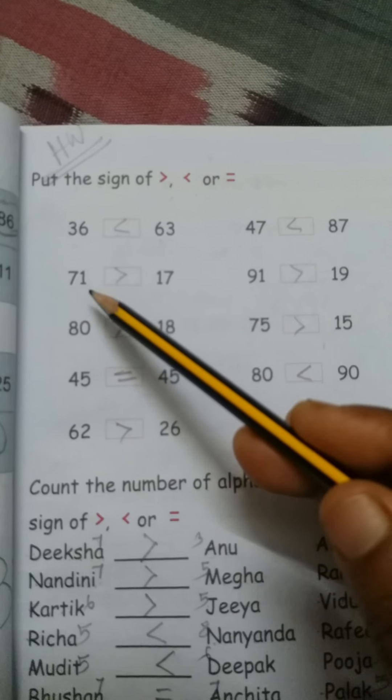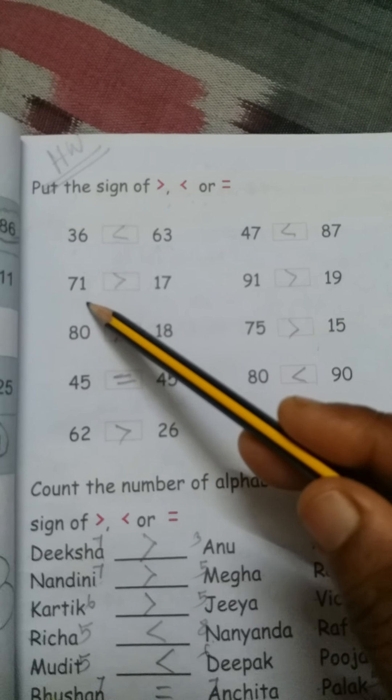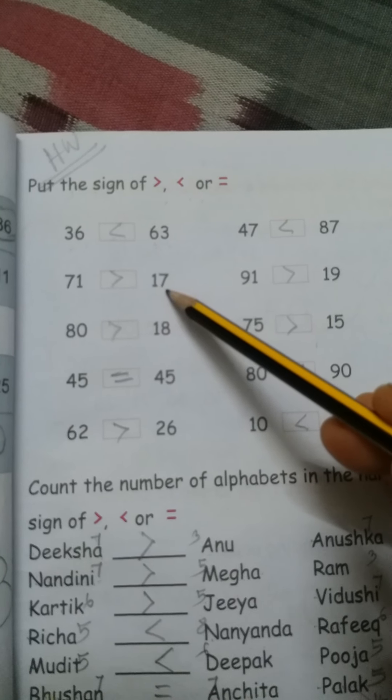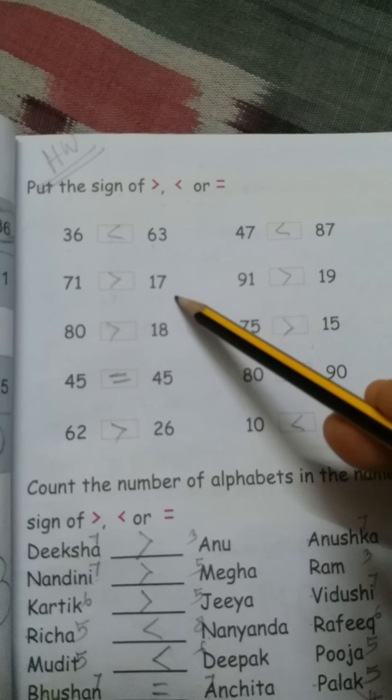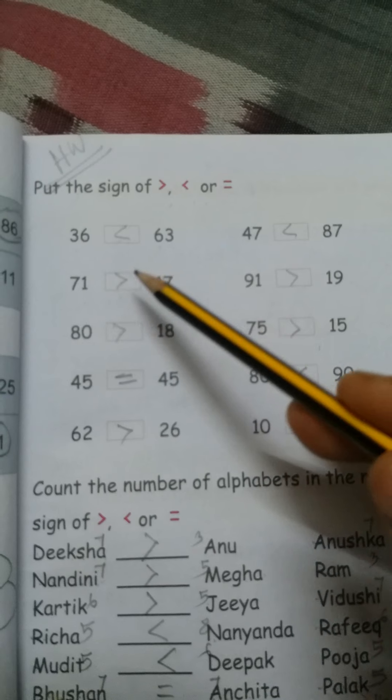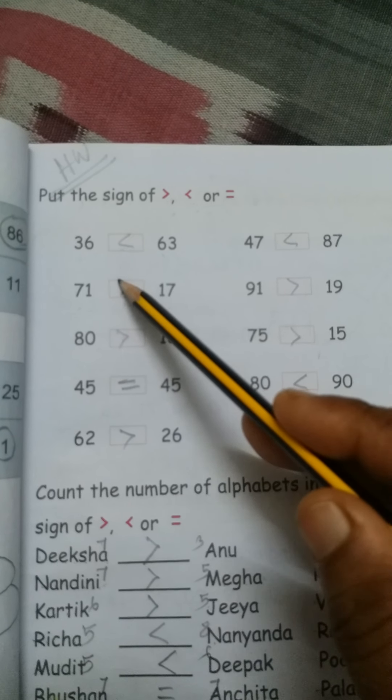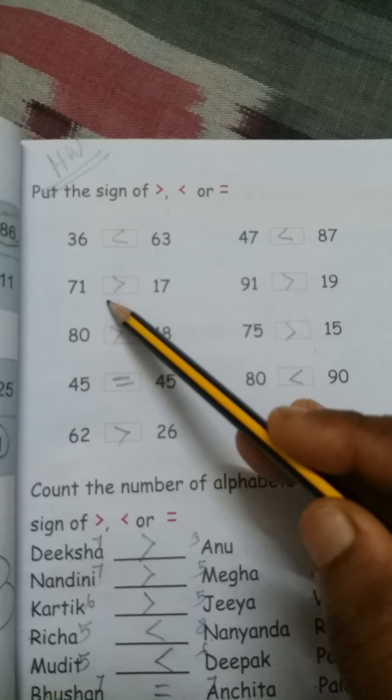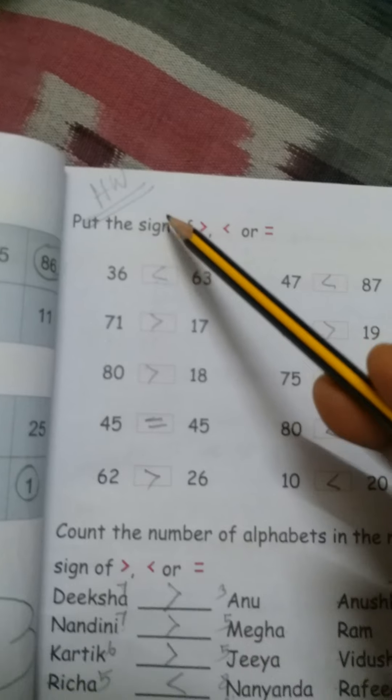Then 71, 17. Which number is big number, 71, and 17 is the small number. So 71 is greater than 17, and 17 is smaller than 71, so we have to draw this sign here. Same way you can finish this much at your home, because this is your homework.